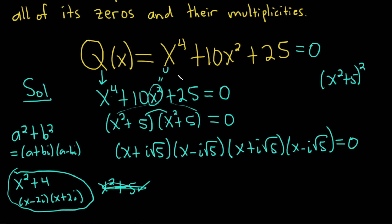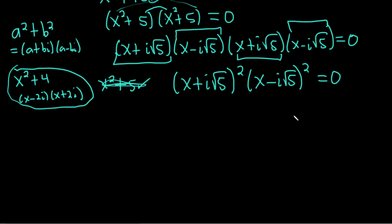Okay, we're looking for the multiplicities. So we want to group together all the like parentheses. So we've got 1 here and 1 here. So we can write that as x plus i square root of 5 squared. And then we have 1 here and 1 here. So this would be x minus i square root of 5 squared. And that's equal to 0. And the reason we want to do that is because now we can identify the multiplicities. The multiplicity is basically this number here. So 2.